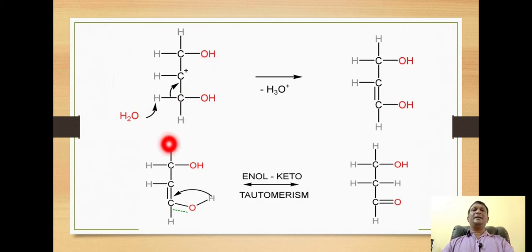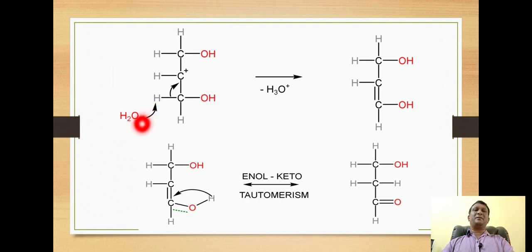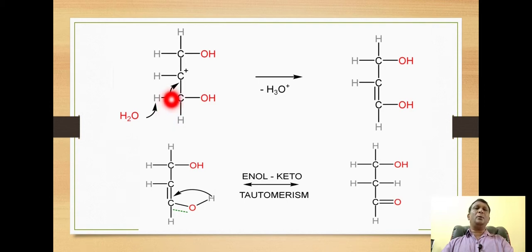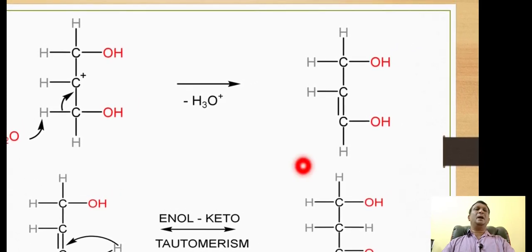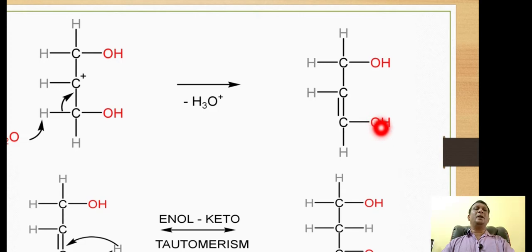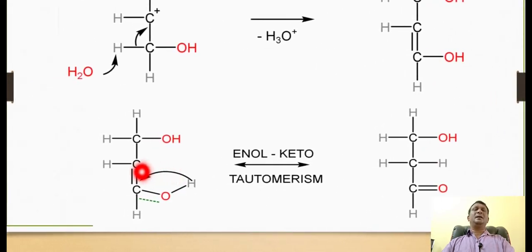The secondary carbocation is attacked by a water molecule. The water molecule abstracts a proton from the carbon which is next to the carbocation. When this abstraction takes place, the water gets converted to the hydronium ion. The carbon-hydrogen bond is broken and the electrons of this bond are utilized to form a double bond — a pi bond — with the carbocation carbon. When this double bond is generated, it gives formation of a compound having both an alkene and an alcoholic structure. This represents an enol structure.